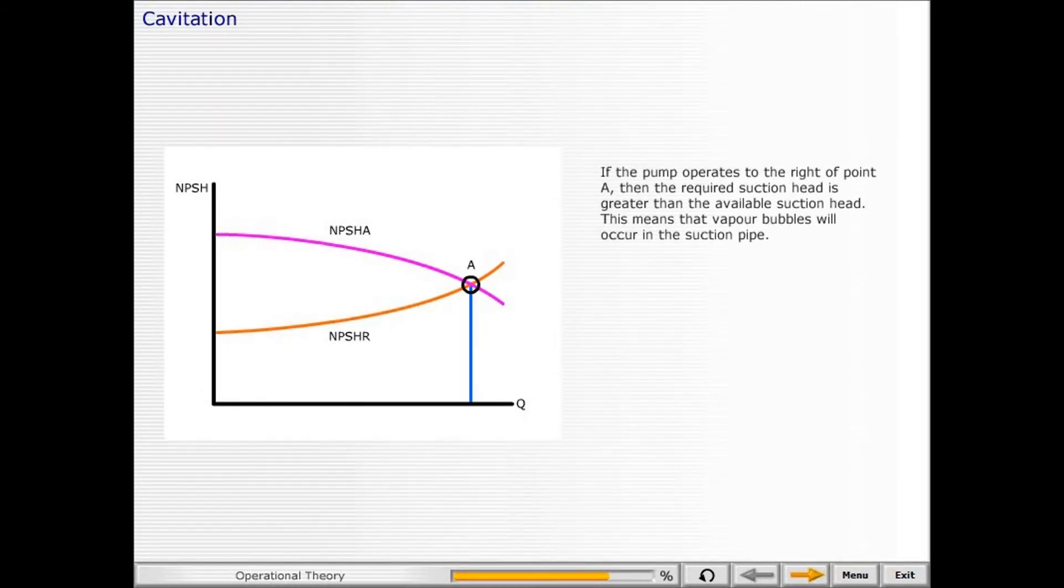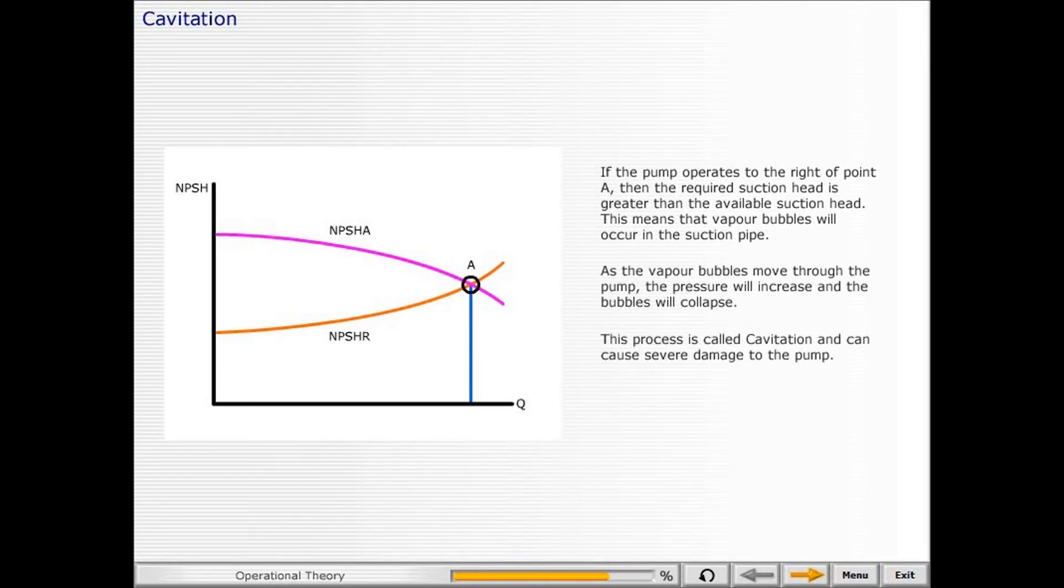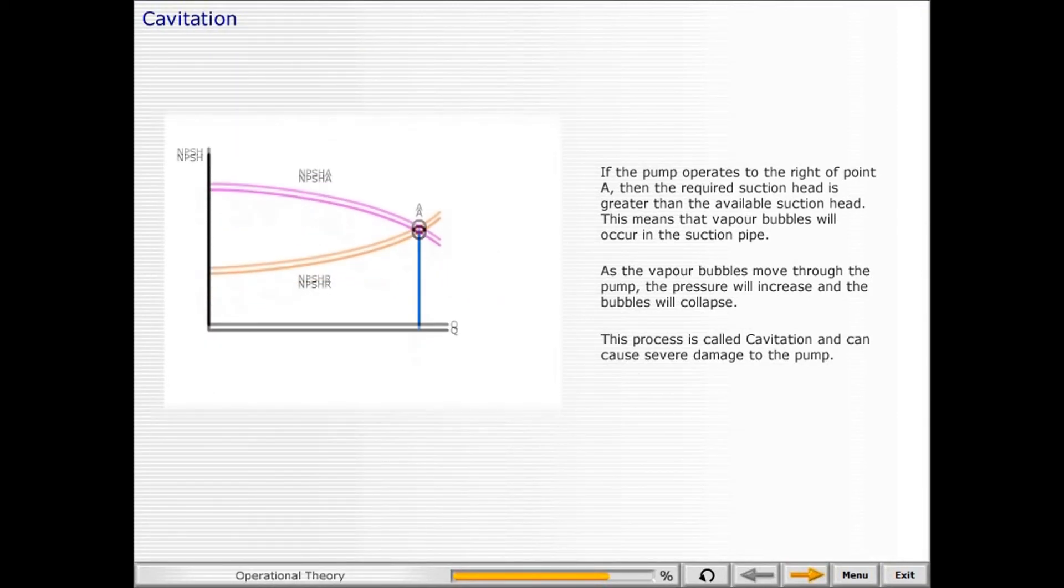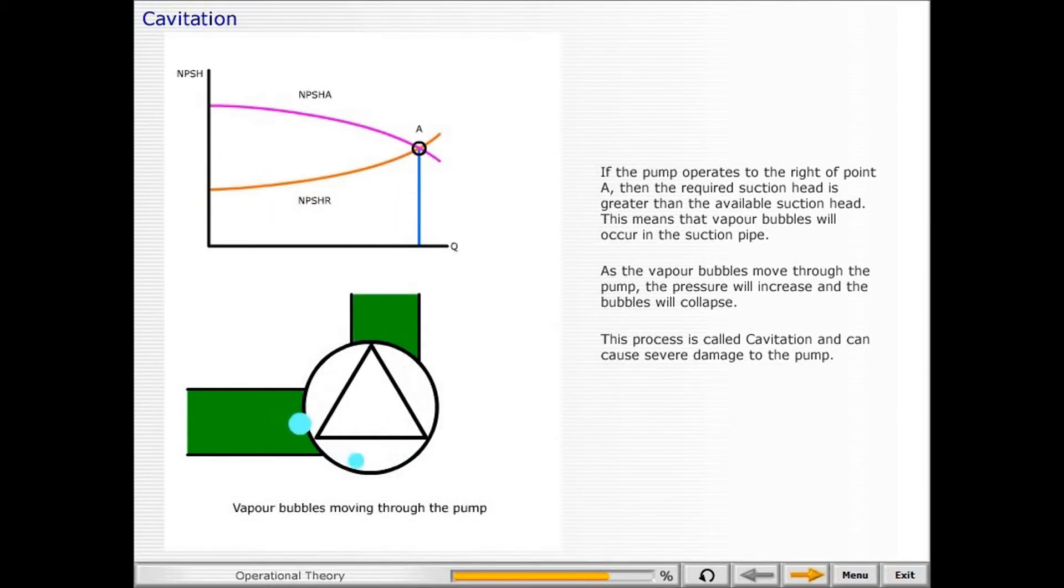If the pump operates to the right of point A, then the required suction head is greater than the available suction head. This means that vapor bubbles will occur in the suction pipe. As the vapor bubbles move through the pump, the pressure will increase and the bubbles will collapse. This process is called cavitation and can cause severe damage to the pump. Operation to the left of point A means that vapor bubbles will not form, and so cavitation will not be a problem.